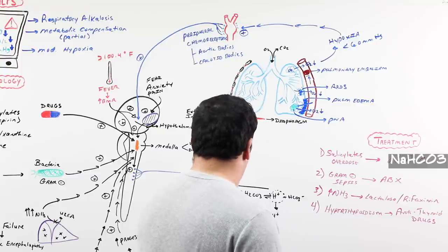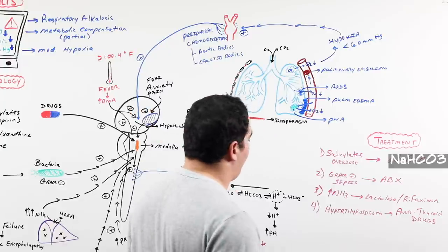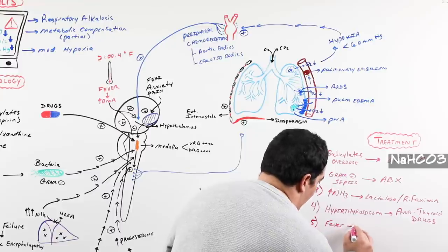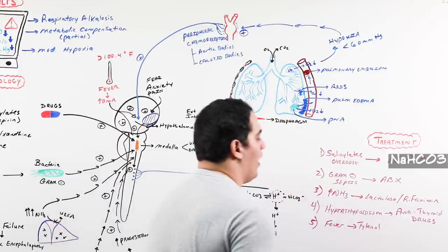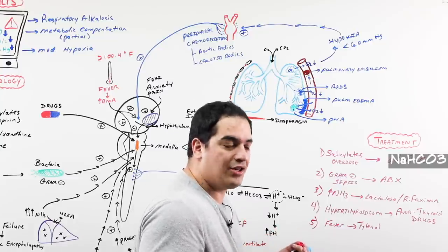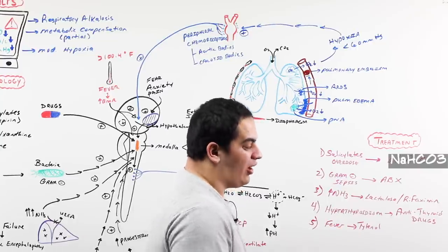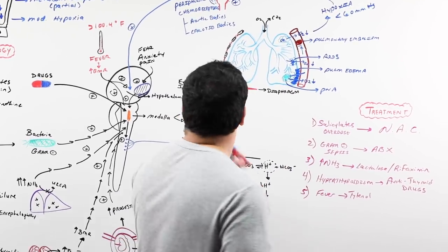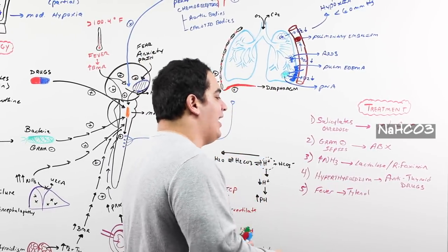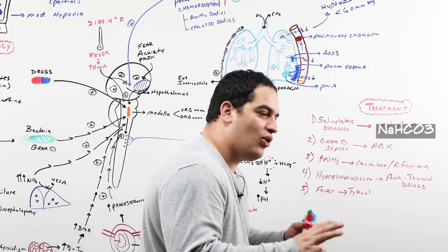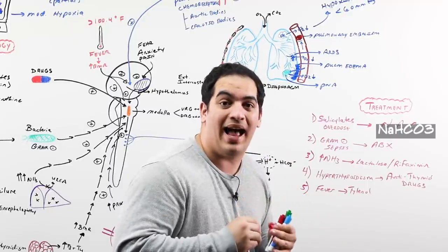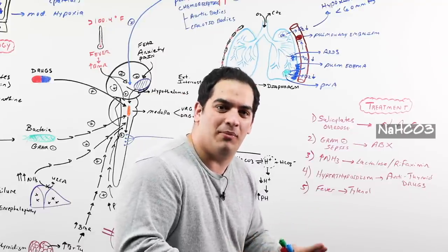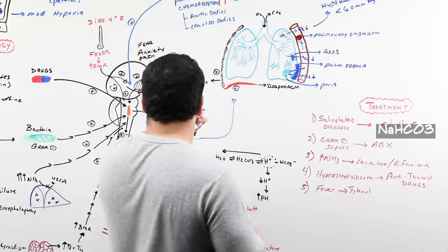Nothing you can really do about the progesterone of pregnancy — that's part of the process. If they have a fever, you can give Tylenol, but you have to figure out why they're febrile — is it a CNS reaction or an infection? You can give Tylenol and try to cool them down, but if it's an infection you have to treat the underlying infection. For pain, anxiety, and fear, sometimes it's just telling the patient to calm down, having them breathe into a paper bag to retain their CO2, or giving anxiety medication if needed.